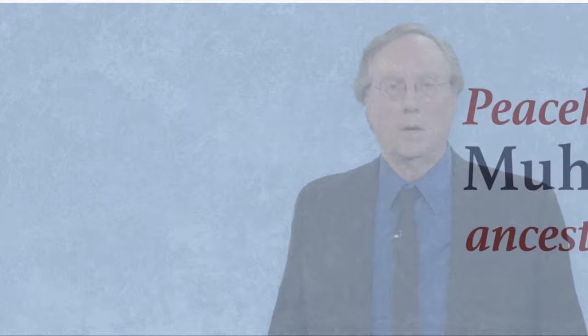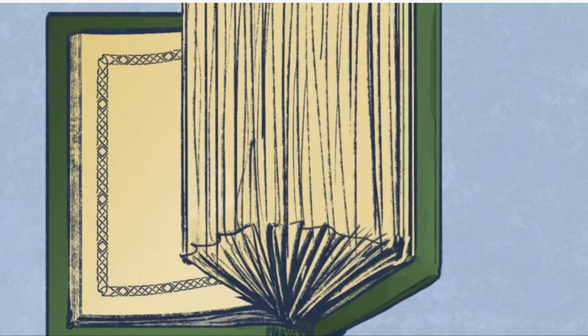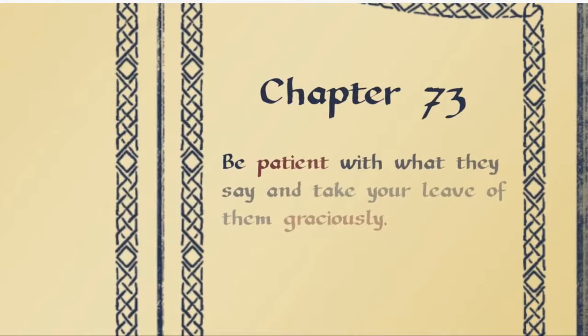Muhammad began preaching a strict monotheism to Meccan pagans, who were outraged. They harassed and boycotted Muhammad's early believers. And in the face of this persecution, the Quran advises Muhammad in chapter 73: Be patient with what they say and take your leave of them graciously.